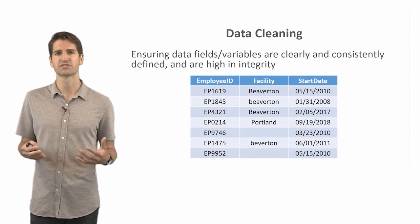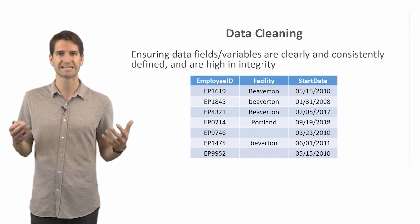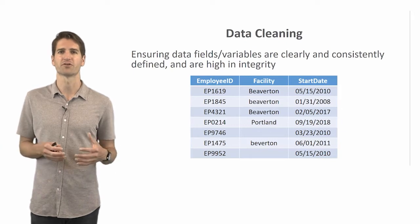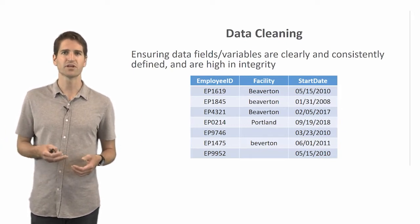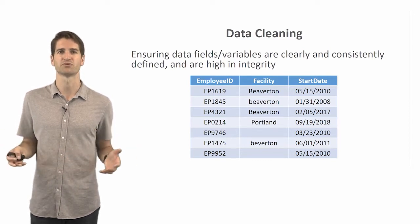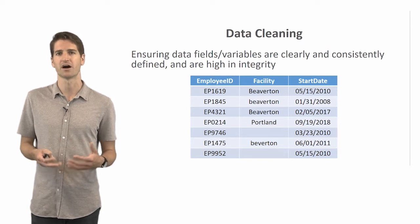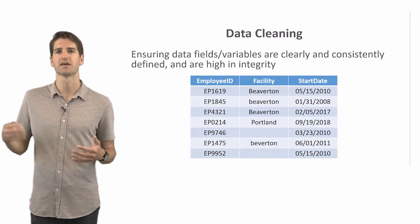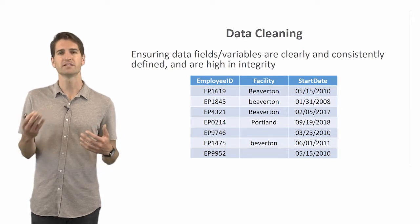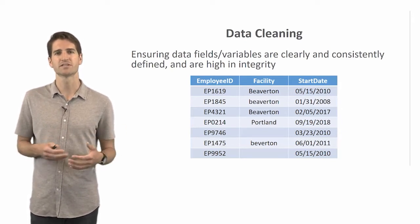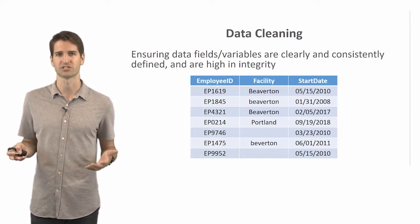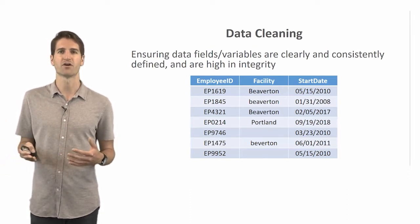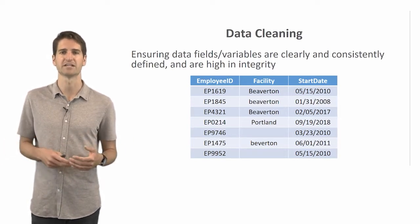So, let's focus on an important step within the data management phase or process. And this is the idea of data cleaning. And so, sometimes you'll hear this referred to as data cleansing as well. And this is where you ensure that the data fields or variables are clearly and consistently defined and are high in integrity. And so, here I've actually provided an example of a very simple data table in which we can illustrate some very simple data cleaning concepts. So, here you see we have an employee ID variable. This is our unique identifier. You can imagine this being a key variable to link this table to other tables as part of a relational database. In addition, we have our field or variable that's facility. So, this is the facility where each employee, which is represented as a row, currently works in. And so, here we have represented Beaverton and Portland. And then third, we have our field or variable, which is the start date for the employees.